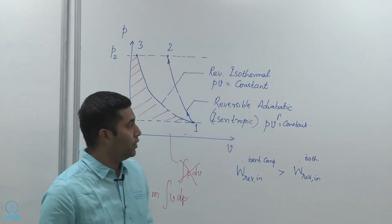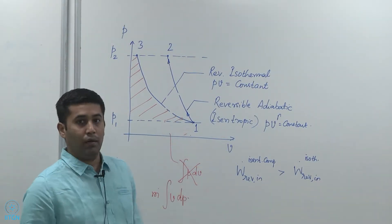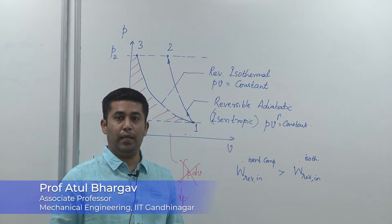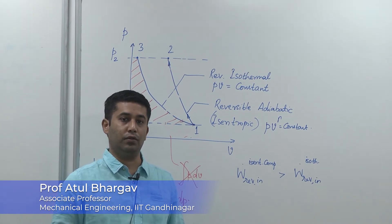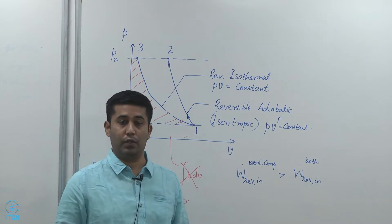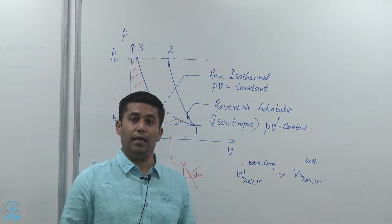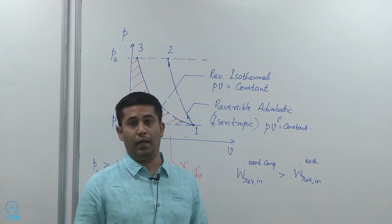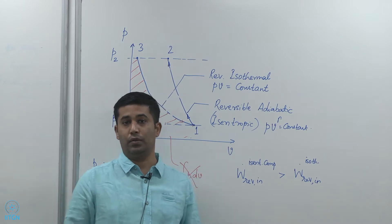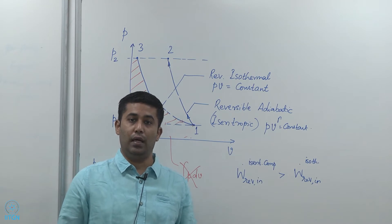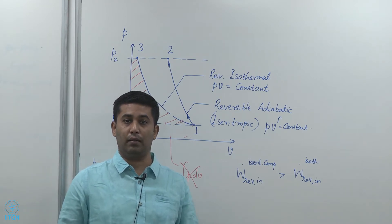In the previous video we saw that reversible adiabatic compressors and reversible isothermal compressors have different work input requirements, and that reversible adiabatic compressors consume more work than reversible isothermal compressors. So let us look at the implications of these in practical compressors.